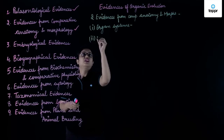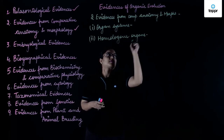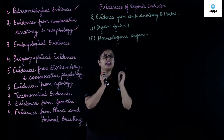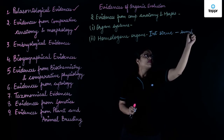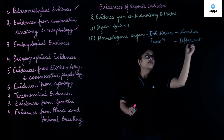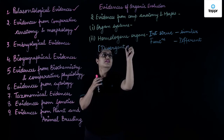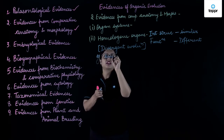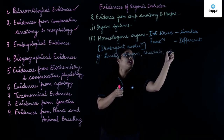Next, we'll study about homologous organs. These are the organs which are similar in their internal structure but they are different in functions. That means they have divergent evolution. Let's see some examples of homologous structures like the limbs of man, cheetah, whale, and bat.